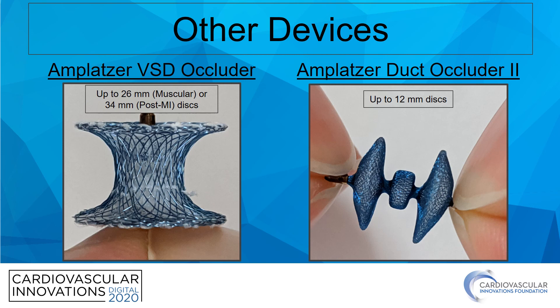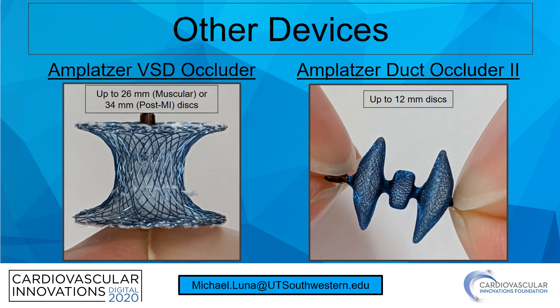A final thought: although off-label, you can consider other devices if available and you need to improvise. Two that can be considered are the Amplatzer VSD occluder and the Amplatzer duct occluder 2. The muscular VSD occluder has discs up to 26 millimeters in diameter and the post-MI VSD occluder has discs up to 34 millimeters, useful for large vascular structures. The ADO2 has discs up to 12 millimeters and is a very deliverable device. I'm happy to take questions by email at michael.luna@utsouthwestern.edu. Thank you.